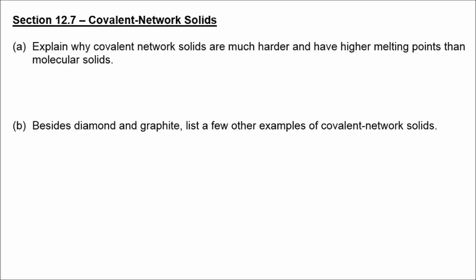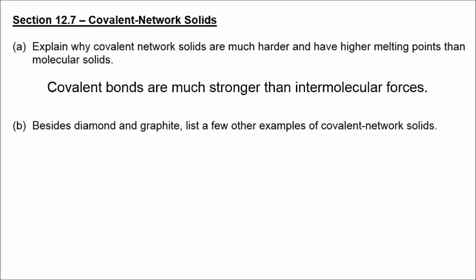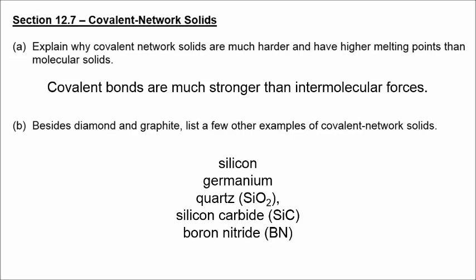Section 12.7, covalent network solids. You can imagine that if you're held together by covalent bonds, and covalent bonds are very strong, covalent network solids are much harder and have higher melting points than molecular solids. Besides diamond and graphite, other examples include silicon, germanium, quartz, which contains silicon and oxygen, silicon carbide, and boron nitride. All of these are extended networks of covalent bonds.